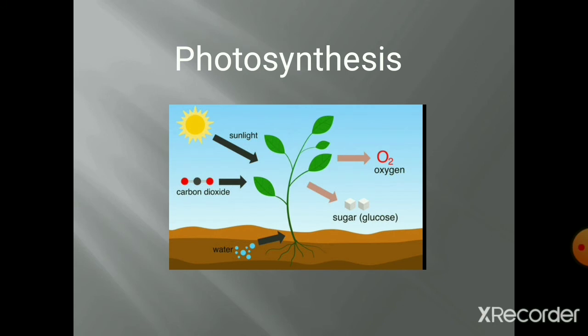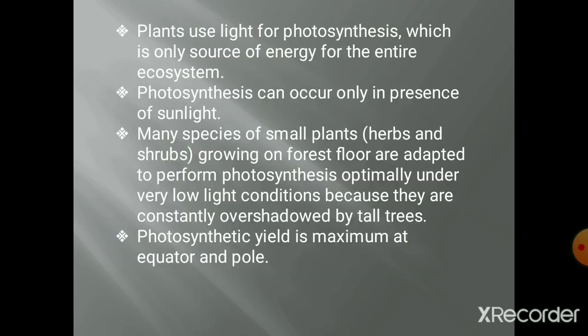About photosynthesis - you know the process of photosynthesis. Photosynthesis is the major process occurring in case of plants. The process of photosynthesis depends on the quality, intensity, as well as the duration of light for which the plant is exposed. Photosynthesis occurs only in the presence of sunlight. Many species of small plants, that means herbs and shrubs, grow on the forest floor.